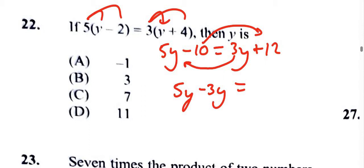So it becomes 10 plus 12. The negative 10 becomes a positive 10, and so 2y equals 22. Dividing both sides by 2, we get y is equal to 11.